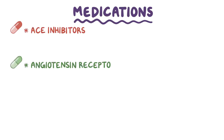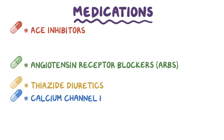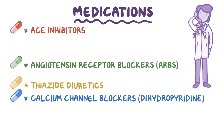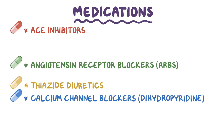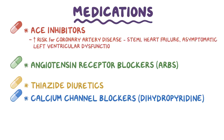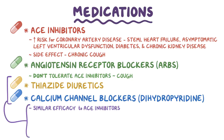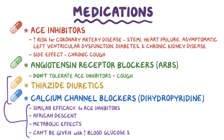There are four main classes of medications used to treat hypertension: ACE inhibitors, angiotensin receptor blockers or ARBs, thiazide diuretics, and long-acting calcium channel blockers like dihydropyridine. ACE inhibitors are started in patients at high risk for coronary artery disease, including those with prior STEMI, heart failure, asymptomatic left ventricular dysfunction, diabetes, and chronic kidney disease. A common side effect of ACE inhibitors is chronic cough, so ARBs are often started in patients who don't tolerate ACE inhibitors. Thiazide diuretics and calcium channel blockers show very similar efficacy to ACE inhibitors and are first-line therapy in patients of African descent, but diuretics have metabolic effects so they can't be given to patients with high blood glucose and cholesterol levels.